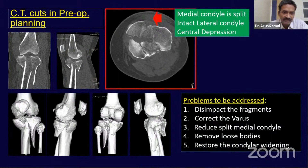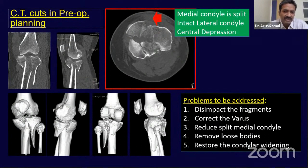In preoperative planning, the problems to address are: first, there is impaction — you need to disimpact the fragments; second, correct the varus; third, reduce the split medial tibial condylar fracture; fourth, remove intra-articular loose bodies; and finally, restore the condylar widening.